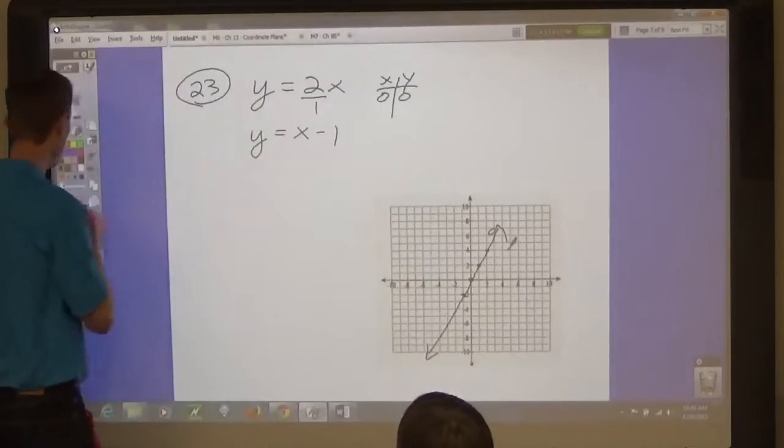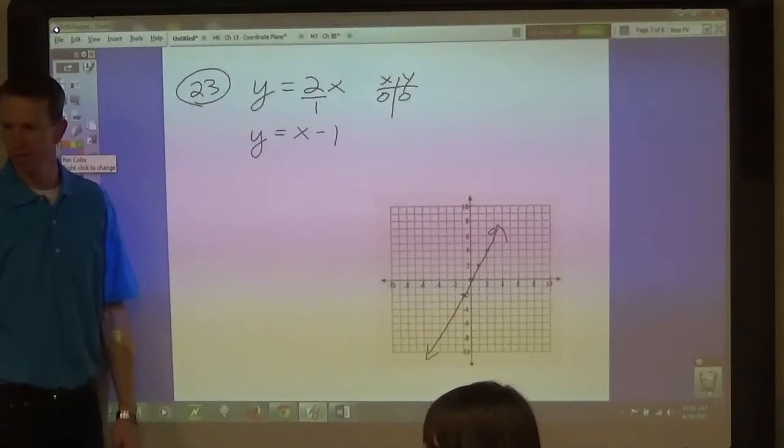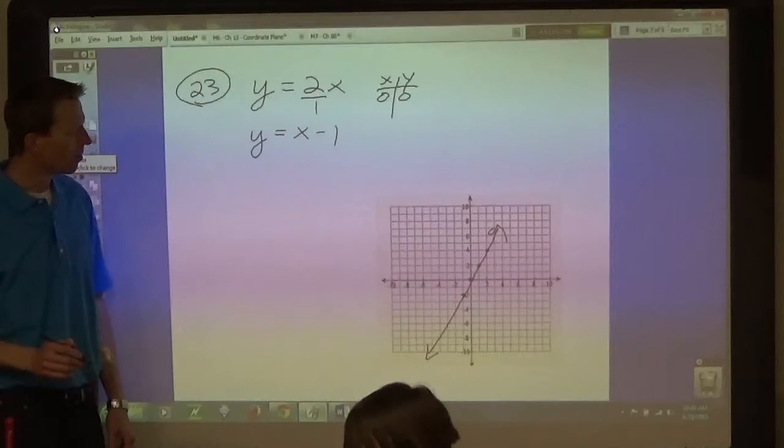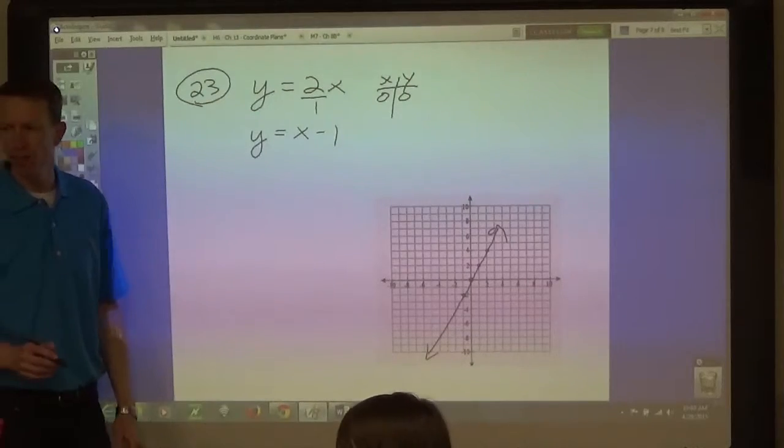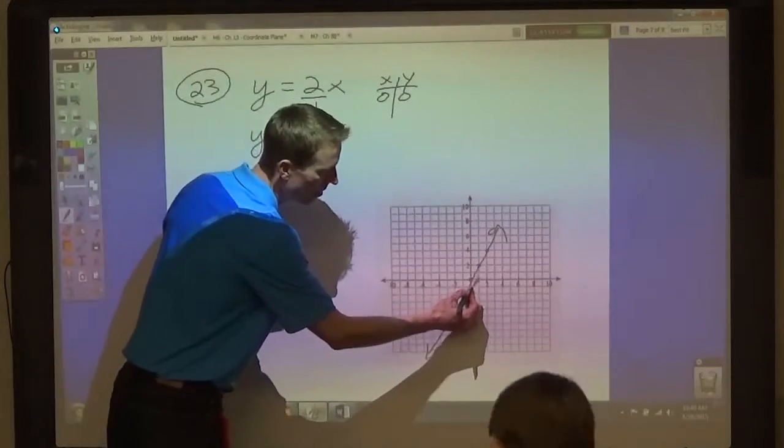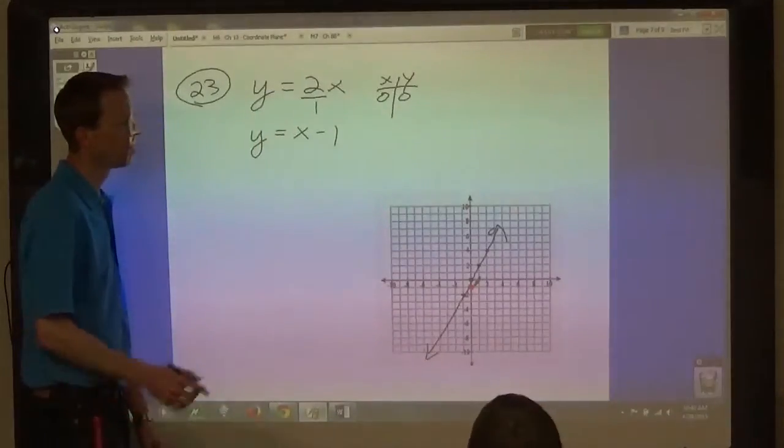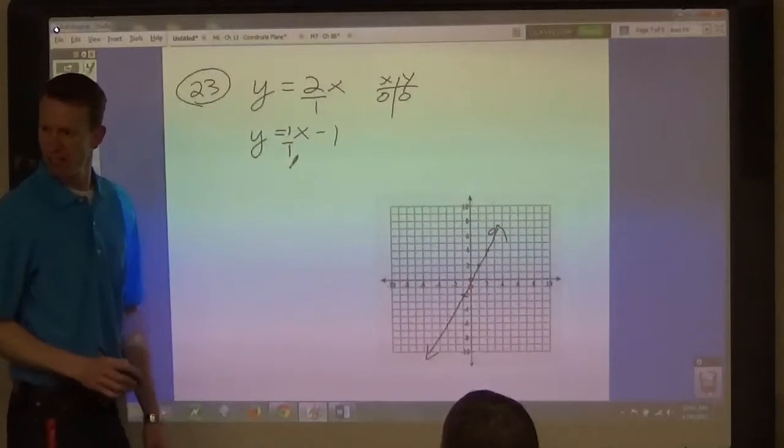And then this one? How can we graph this one? What's b? Oh, negative 1. B is negative 1. So that's the y-intercept. And we go up 1 over 1. Up 1 over 1 is the slope, right? Do you remember this?